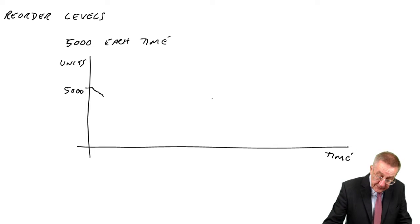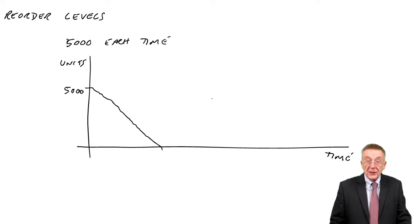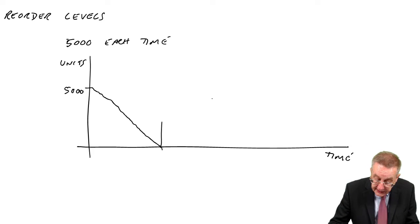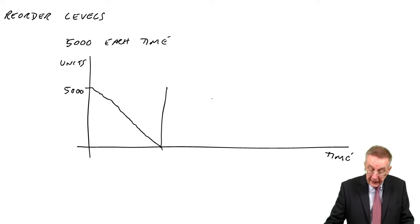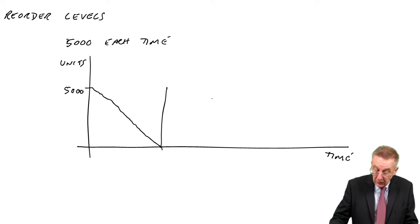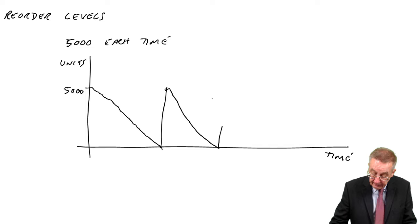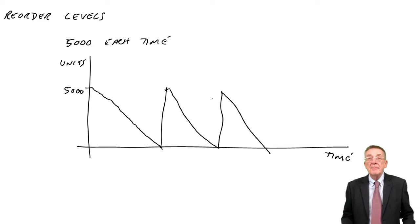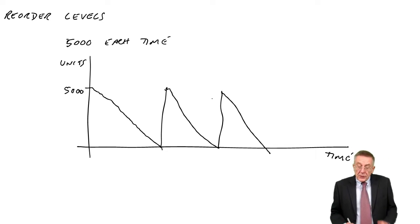Customers are, we're selling them to customers so the level falls down to zero. Then another order comes in of 5,000, then back to zero, and so on. Anyway, you've seen it enough times.